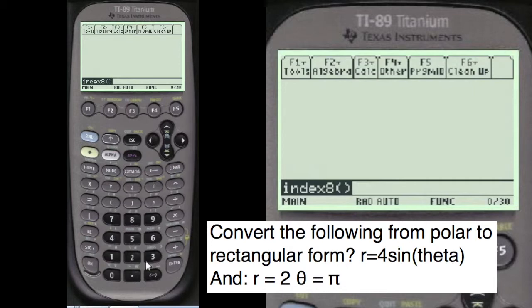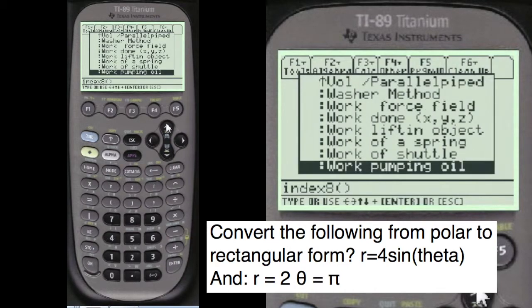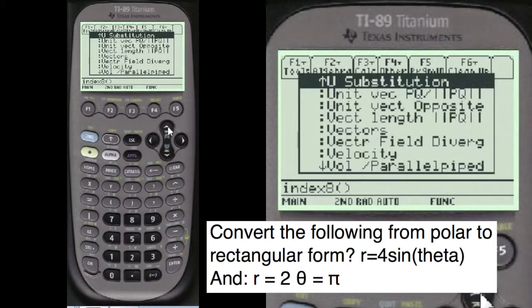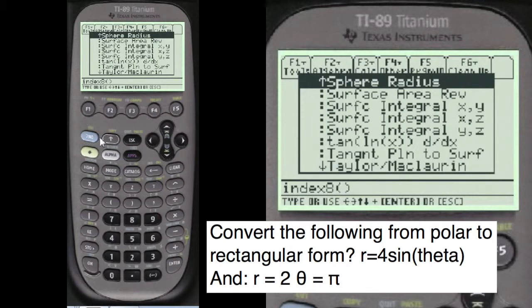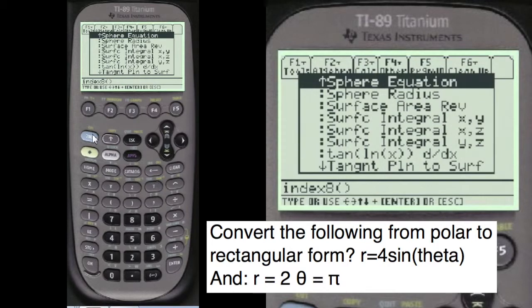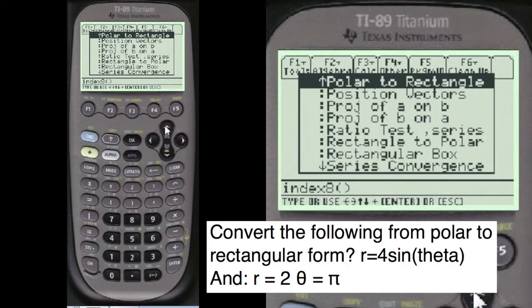Index 8 to get to my menu, and we're going to scroll up. You can go screen by screen by pressing second. We need to get to the P's where the polar is. There's polar to rectangular.